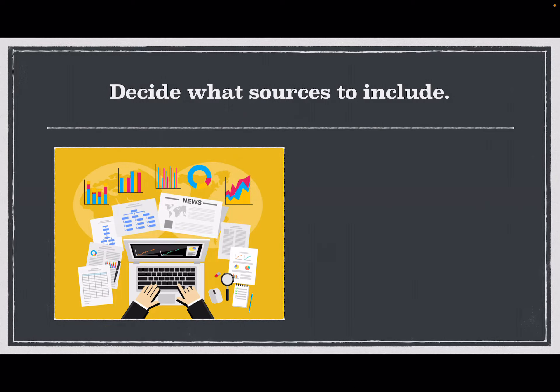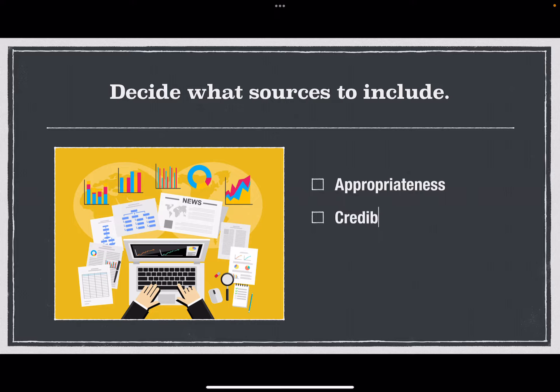Now let's talk about how to get started with this assignment. First of all, you need to decide what sources to include. Make sure that you consider the appropriateness of the source — is the source relevant to your topic? Is it aimed at an appropriate audience? Next, consider the credibility. Is the author reputable? Is the publication or publishing company or sponsor of the source reputable?